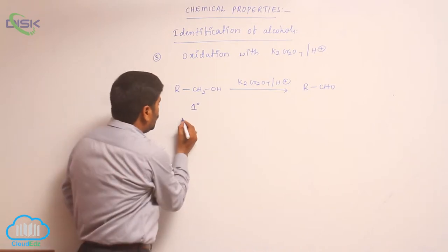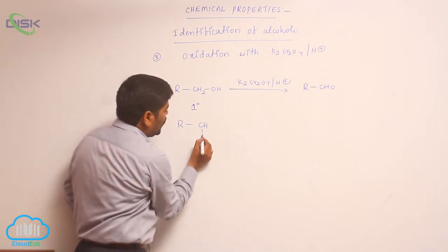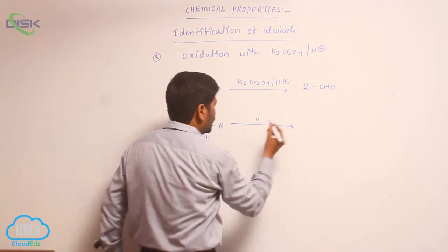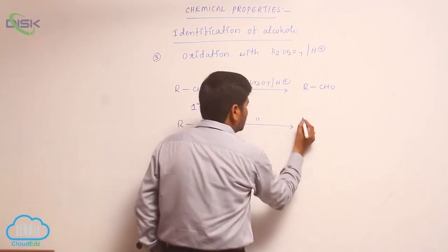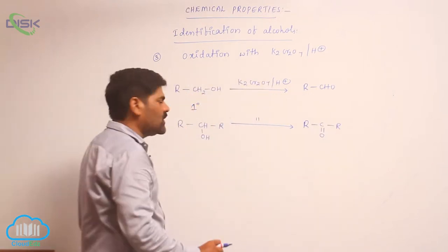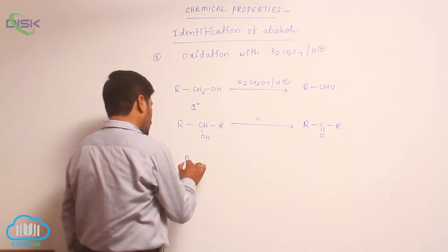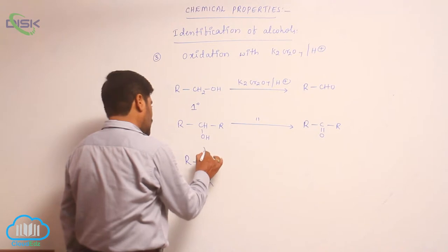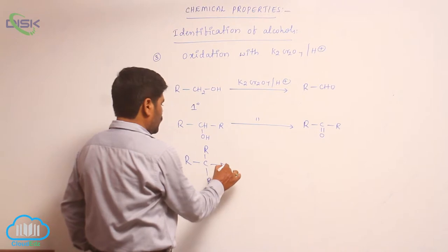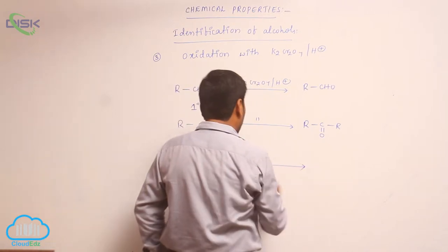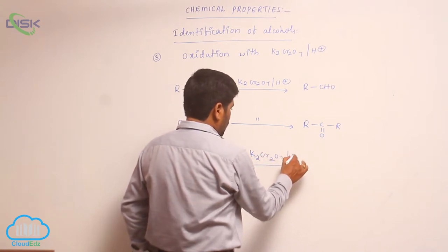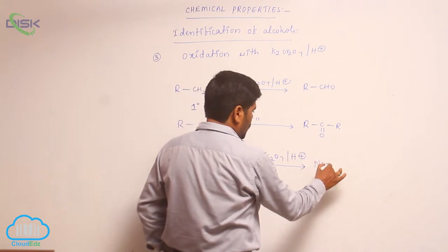A second-degree alcohol (R·CHOH·R') reacts with potassium dichromate K₂Cr₂O₇ in the presence of acid medium and converts into a ketone. A third-degree alcohol (R·CR·R'·OH) will not react with potassium dichromate K₂Cr₂O₇ in the presence of acid medium — no reaction.